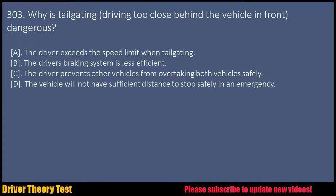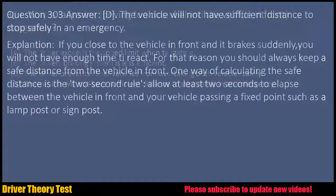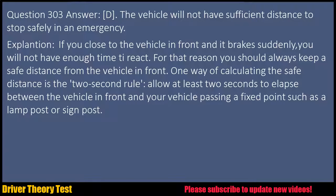Question 303: Why is tailgating — driving too close behind the vehicle in front — dangerous? a. The driver exceeds the speed limit when tailgating. b. The driver's braking system is less efficient. c. The driver prevents other vehicles from overtaking both vehicles safely. d. The vehicle will not have sufficient distance to stop safely in an emergency. Question 303 Answer: D. The vehicle will not have sufficient distance to stop safely in an emergency.